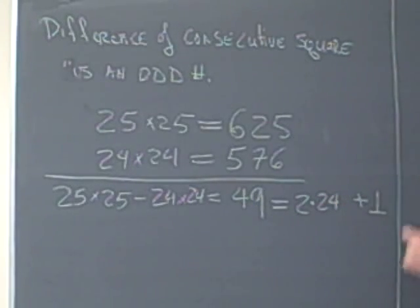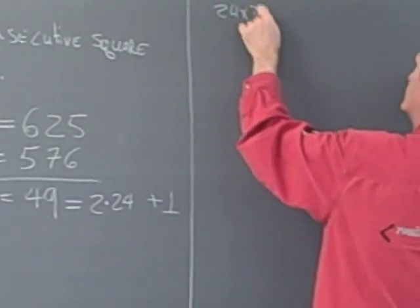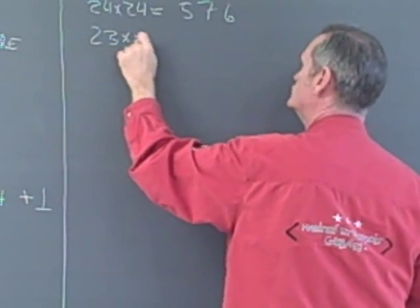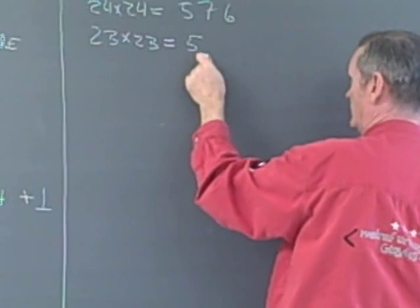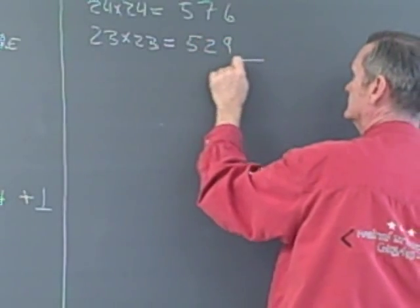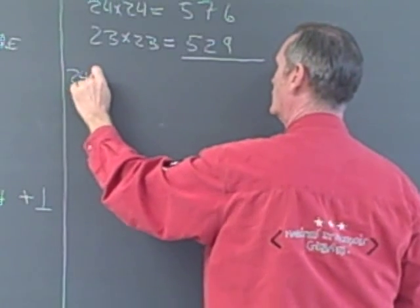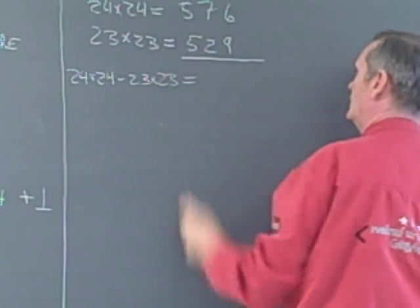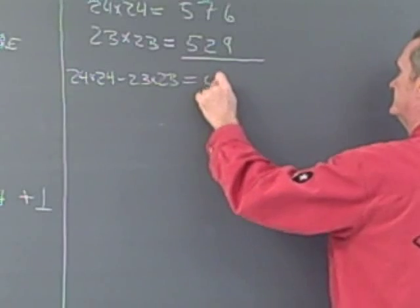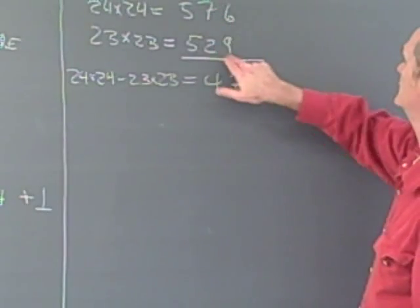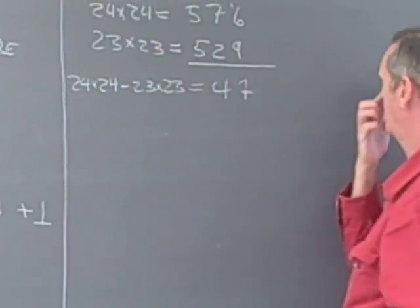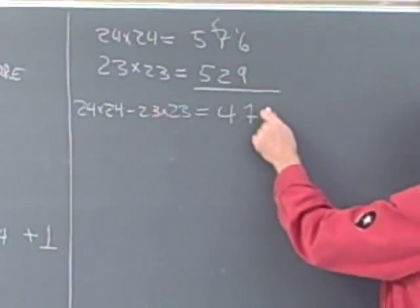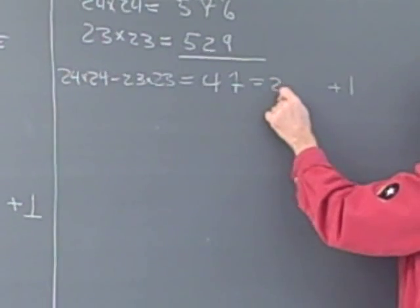Continuing: let's look at 24 times 24, which is 576. And 23 times 23 is 529. If we subtract 23 times 23 from 24 times 24, we get 47. And 47 is one more than two times 23.